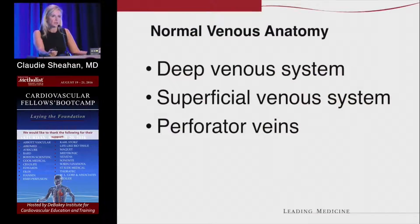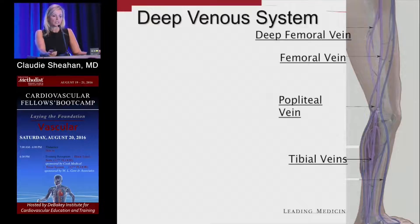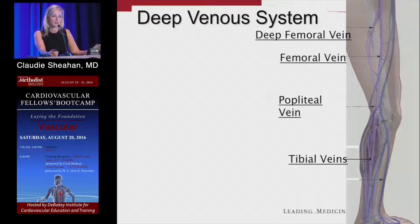There are three different systems in the venous anatomy: the deep venous system, the superficial venous system, and the perforator venous system. In the deep venous system, the deep veins parallel the arteries and start in the calf. They include not only the tibial veins, but also the peroneal vein, the soleus, and the gastrocnemius veins.